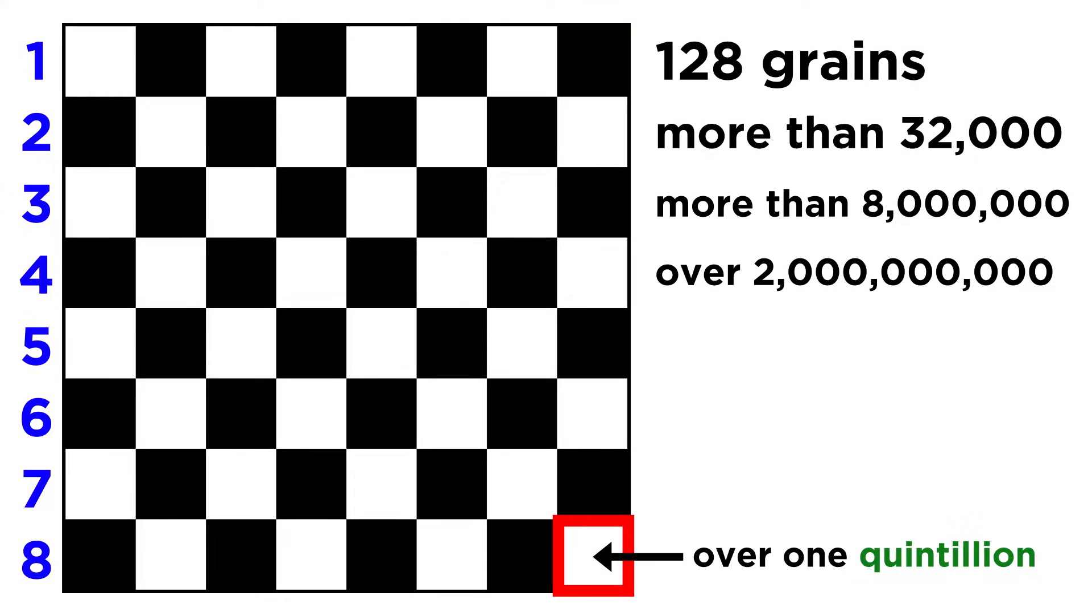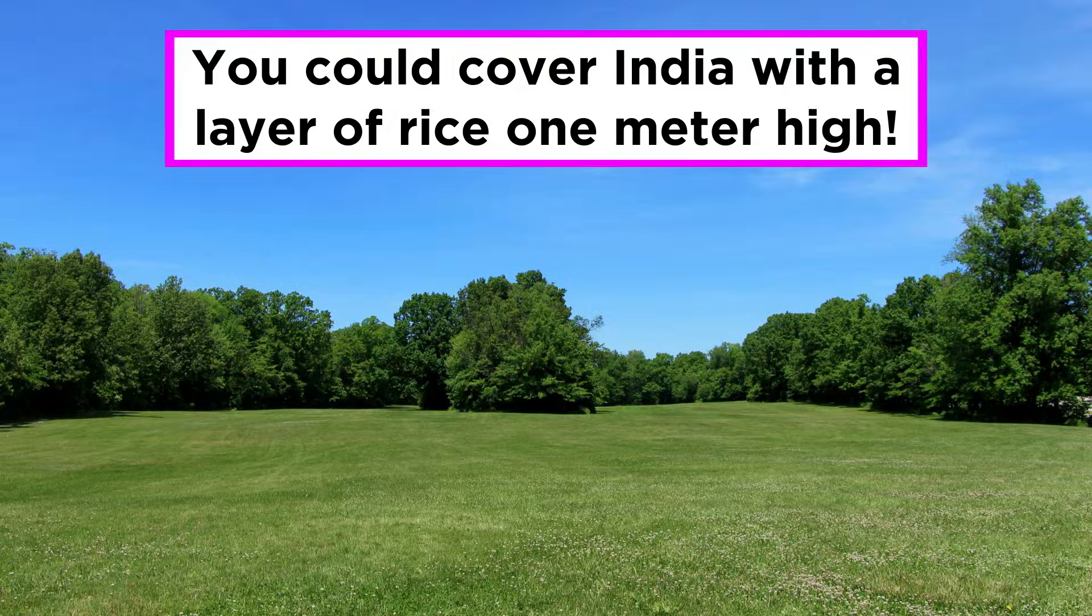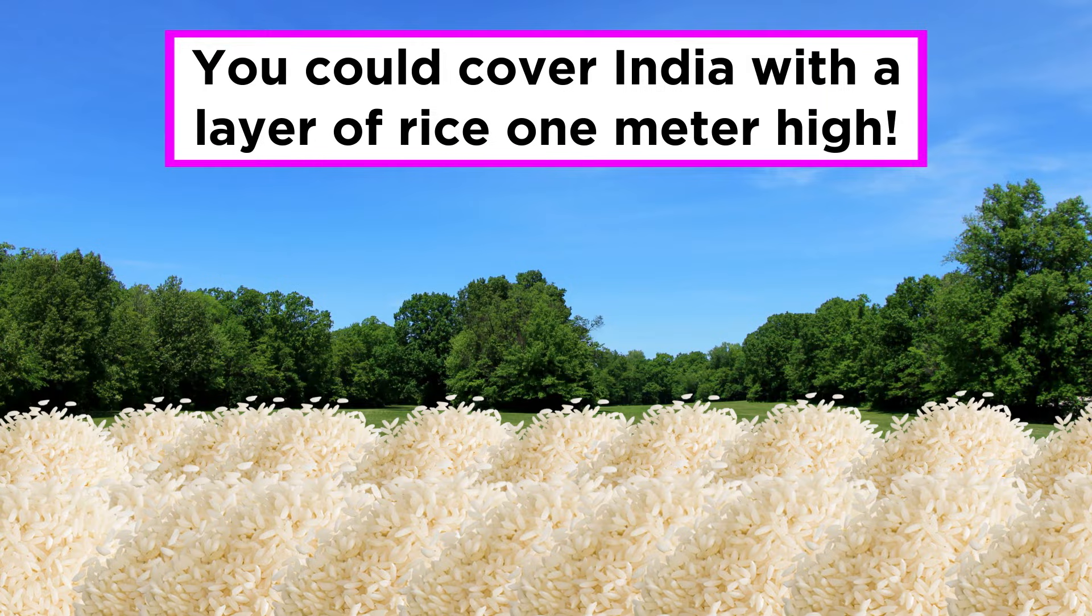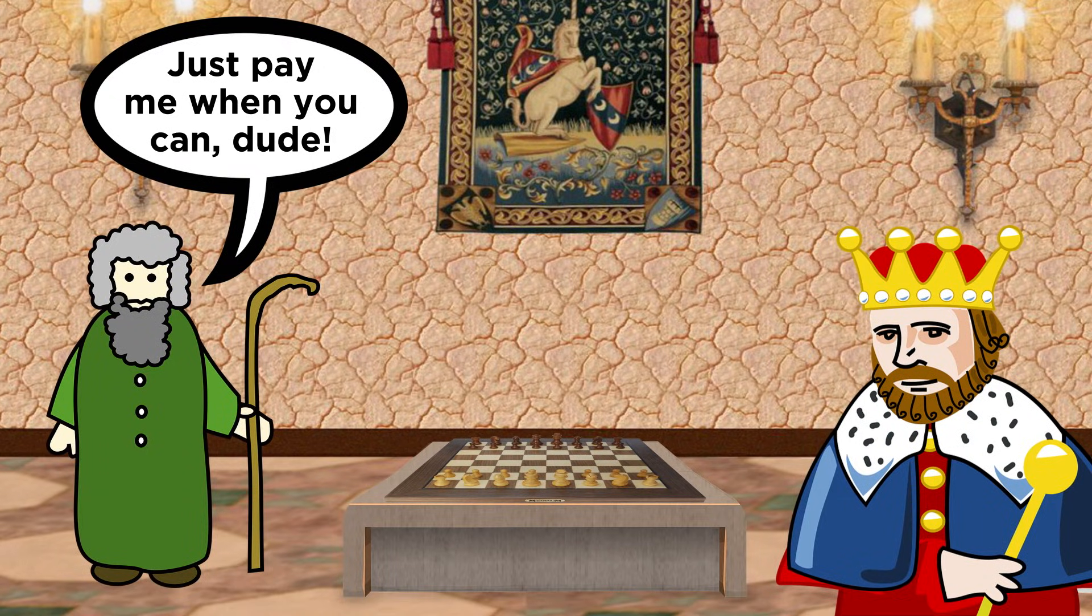On the final square, the king would have to place over a quintillion grains of rice, which is a one followed by eighteen zeros. That's enough rice to cover the entire country of India with a layer of rice a meter high, and this much rice could not exist in the entire world. Luckily for the king, the wise man allowed him to pay in installments.